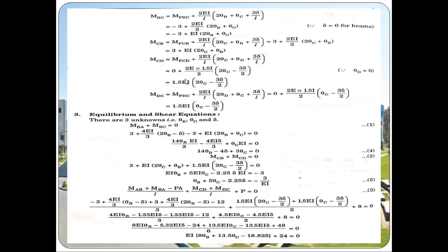Step 3 is the equilibrium and shear equations. The equilibrium equation at joint B is MBA plus MBC equals zero. Substituting the known equations and solving, we get: 14 theta B minus 4 delta plus 3 theta C equals zero — this is equation 4. The joint equilibrium equation at joint C is MCB plus MCD equals zero. Substituting and solving gives: theta B plus 5 theta C minus 2.25 delta equals minus 3 divided by EI — this is equation 5.